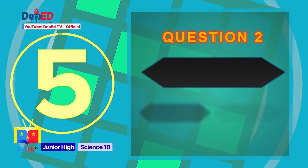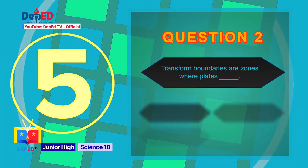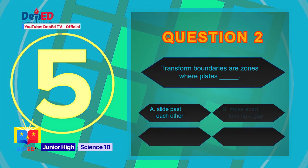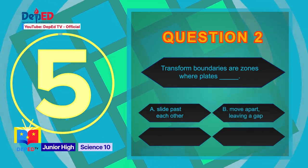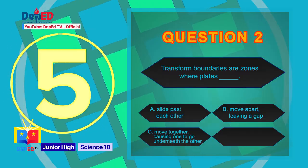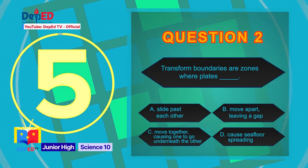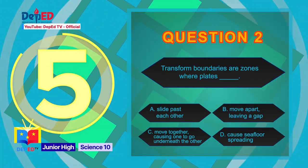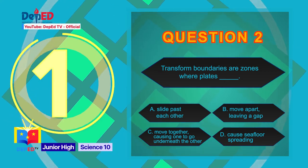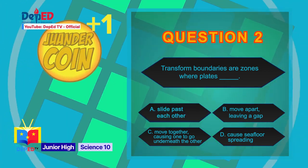Question number 2: Transform boundaries are zones where plates — A) slide past each other, B) move apart leaving a gap, C) move together causing one to go underneath the other, or D) cause seafloor spreading. The correct answer is letter A: slide past each other.